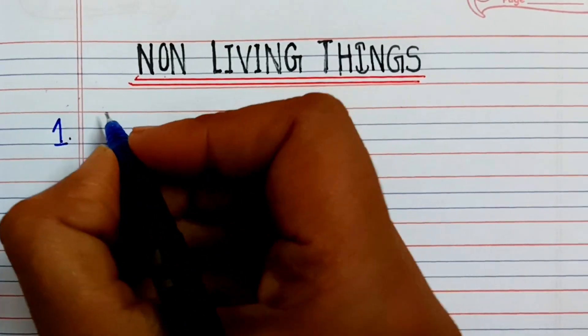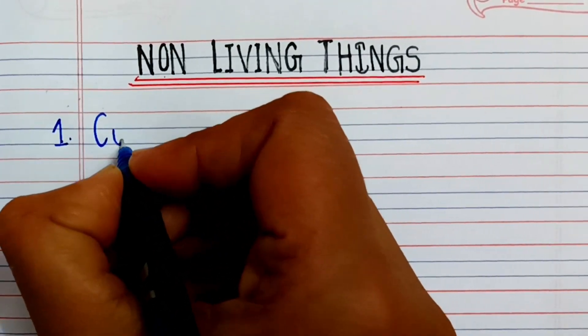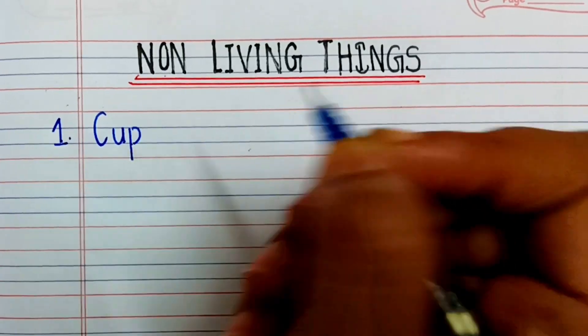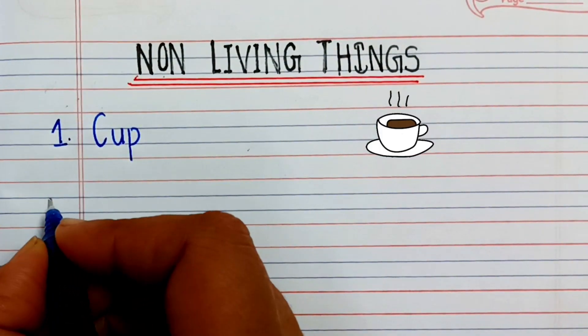Now, let's write the names of non-living things. First one is cup. C-U-P, cup.